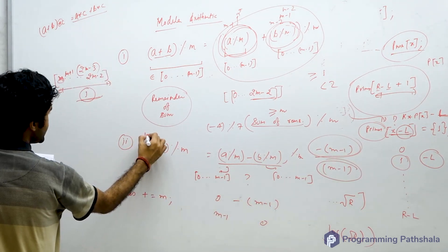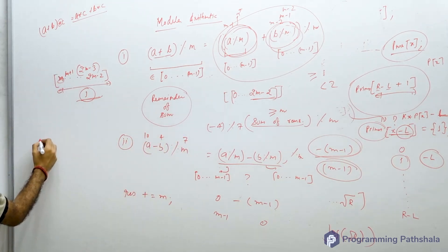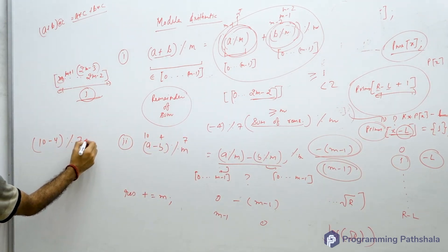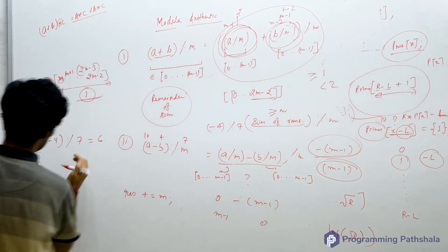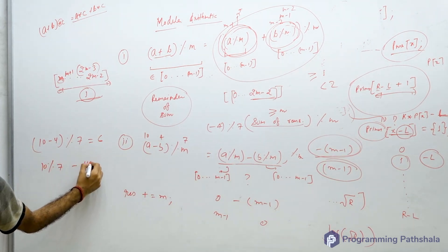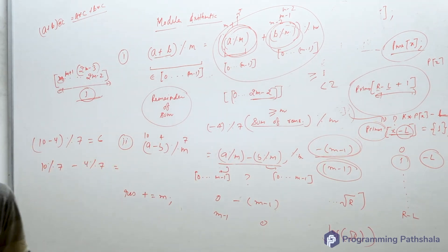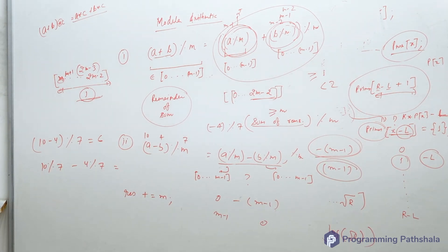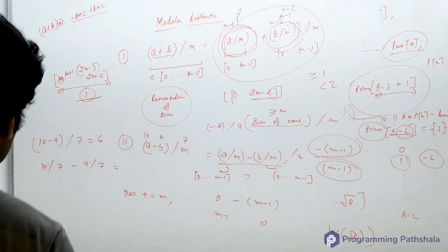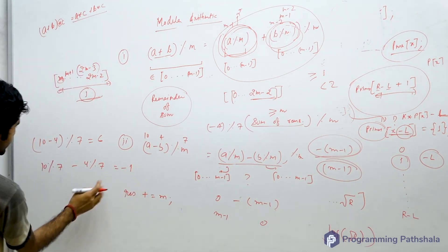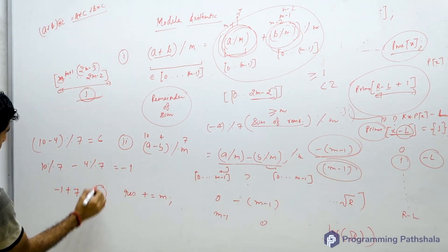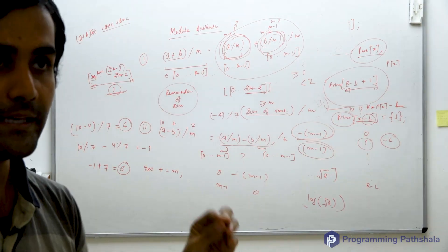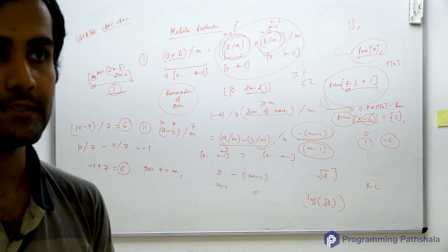Let's take a concrete example: a = 10, b = 4, m = 7. The value of (10 - 4) mod 7 is 6 mod 7, which is 6. Now applying the formula: (10 mod 7) minus (4 mod 7) = 3 minus 4 = minus 1. Since the result is negative, we add m: minus 1 plus 7 equals 6. This matches the direct calculation. So be very stringent about handling negative results in this way.